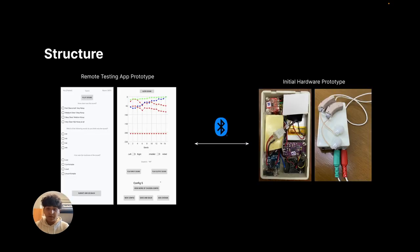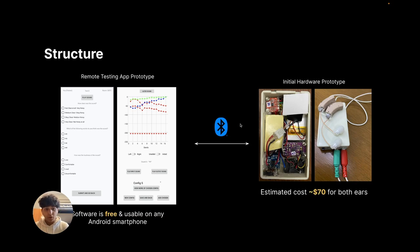To carry all of this out, we have developed both software and hardware prototypes. The approximate cost is around $70 for both ears, and the software can be run on any smartphone device. Finally, thank you for your time and attention.